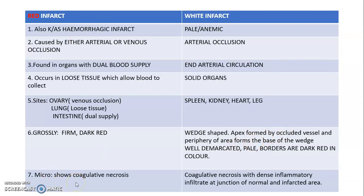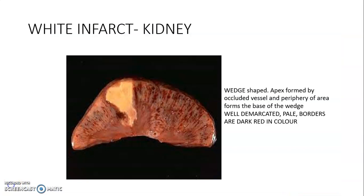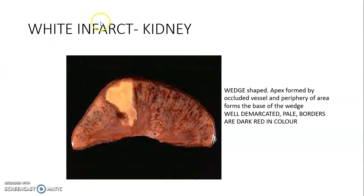Microscopically, red infarct shows coagulative necrosis, and white infarct shows coagulative necrosis with a dense inflammatory infiltrate at the junction of normal and infarcted areas. This is the gross picture of white infarct of the kidney — it is wedge shaped, with the apex formed by the occluded vessel and the periphery forming the base of the wedge.